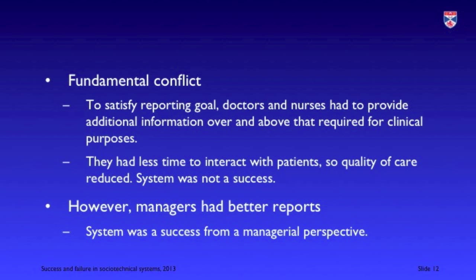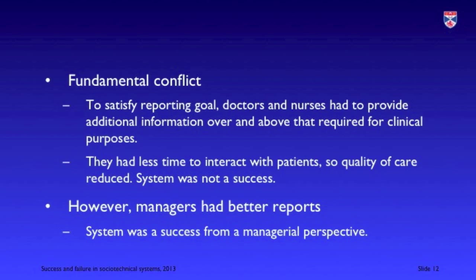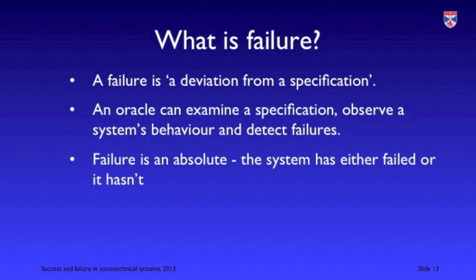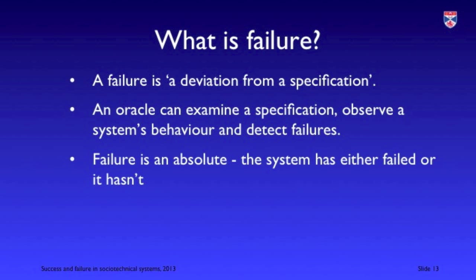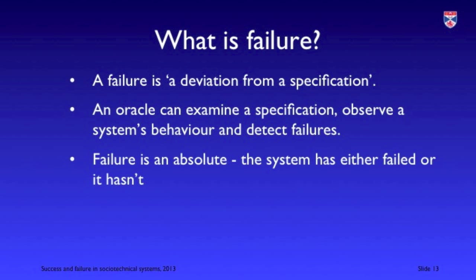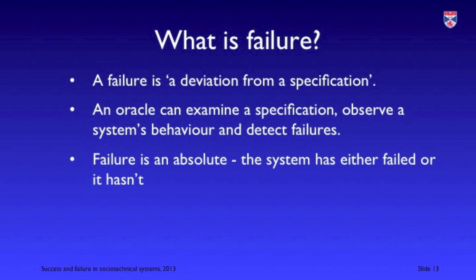Let's now look at failure. In a technical system, a failure is a deviation from a specification. Imagine a magical oracle who knows everything about a system and its specification — they can look at a system's behaviour and say 'that's a failure because it deviated from the specification.' This is illustrated by the notion that there are no small mistakes in civil engineering — clearly there has been a deviation from a specification. However, socio-technical systems are not quite like that.